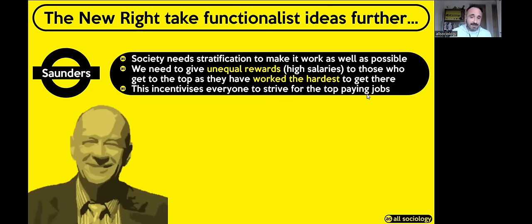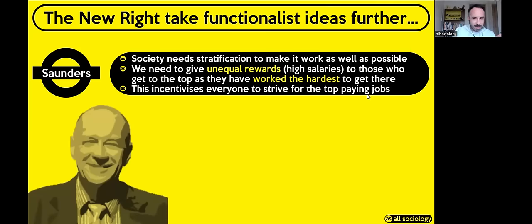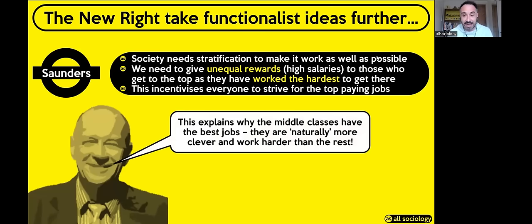Saunders argues that because lawyers and doctors get paid the most, this encourages you to go for those jobs to get the most rewards. However, Saunders also argues that there is an almost natural reason why the middle classes have the best jobs — he would argue the middle classes are naturally more clever than the working classes and work harder, which is why you tend to find middle class people as lawyers and doctors. I'll leave you to debate whether you believe that or not — personally I don't.